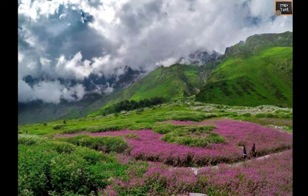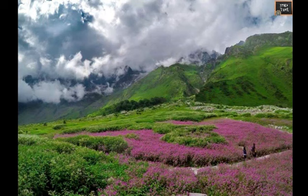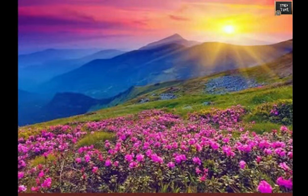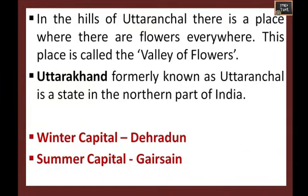In the hills of Uttarakhand there is a place where there are flowers everywhere. This place is called the Valley of Flowers. In some places you can see red flowers blooming, and you can also see white flowers, yellow flowers, blue flowers. All these flowers seem like a beautiful dream. Like a dream, these flowers bloom only for a few weeks in the year.